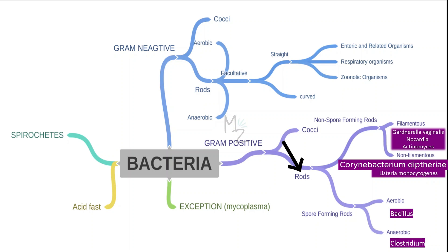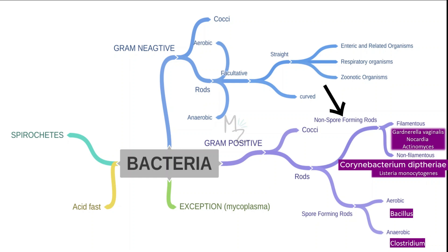Rods are further subdivided into non-sporeforming and sporeforming. We are done with the sporeforming rods in our recent videos — if you guys have missed those videos, be sure to check them out. Today we'll be talking about non-sporeforming rods, which are further subdivided into filamentous — which includes Gardnerella vaginalis, Nocardia, and Actinomyces — and non-filamentous, which includes Corynebacterium diphtheriae, the topic of today's video, and Listeria monocytogenes.